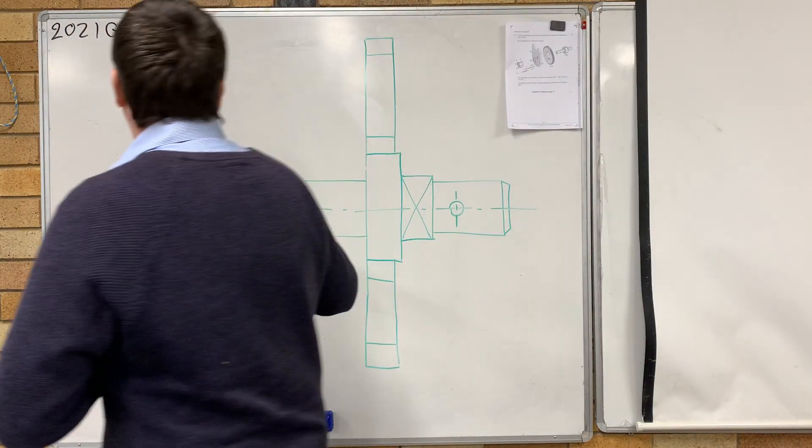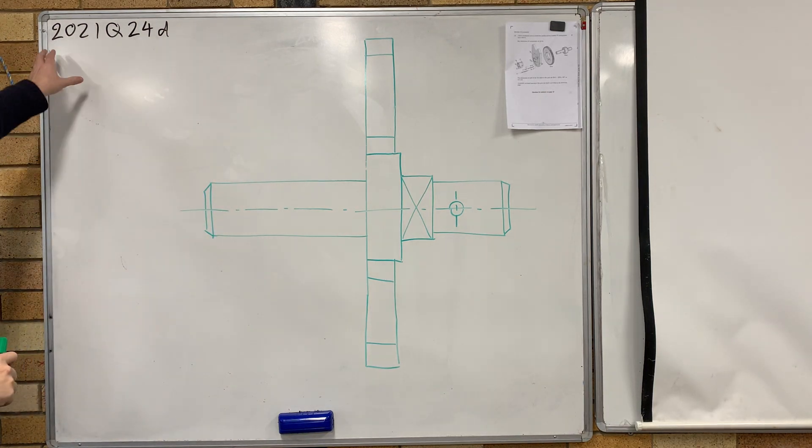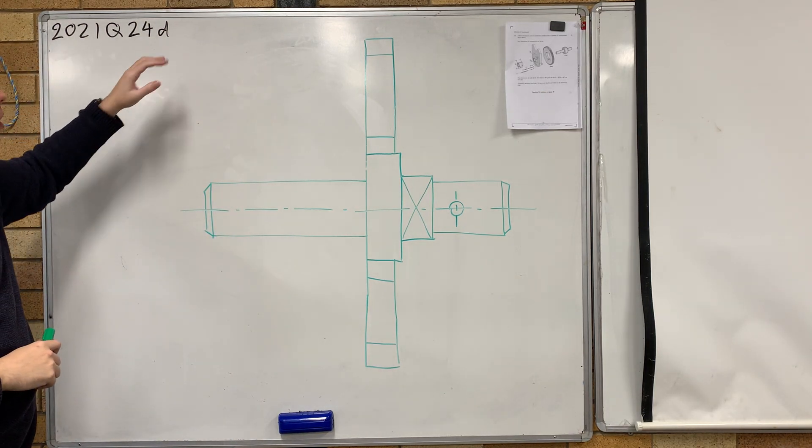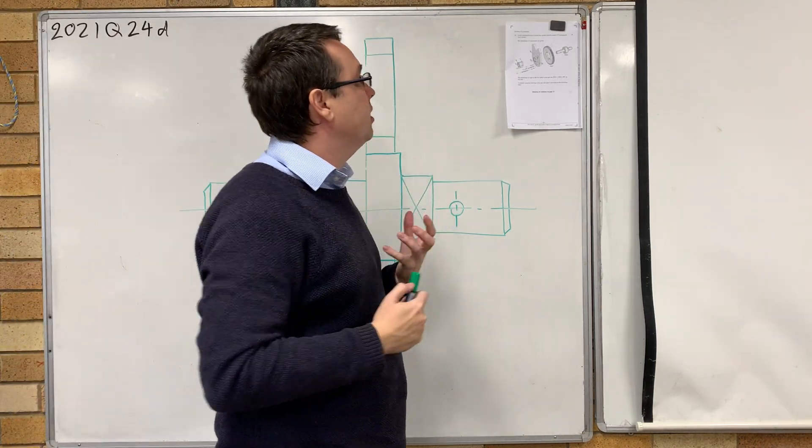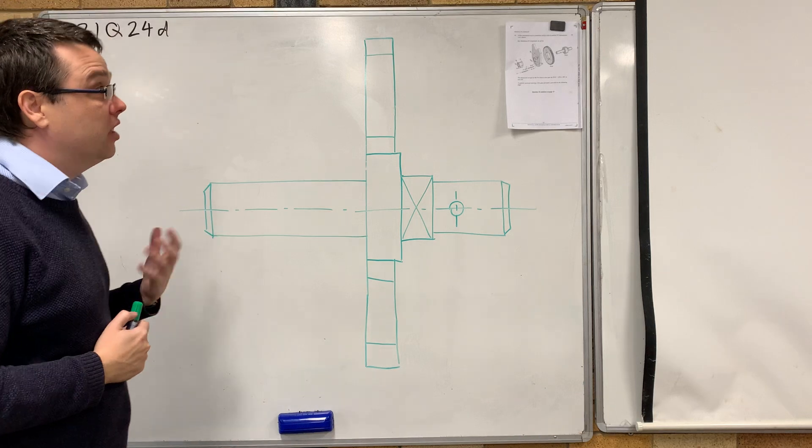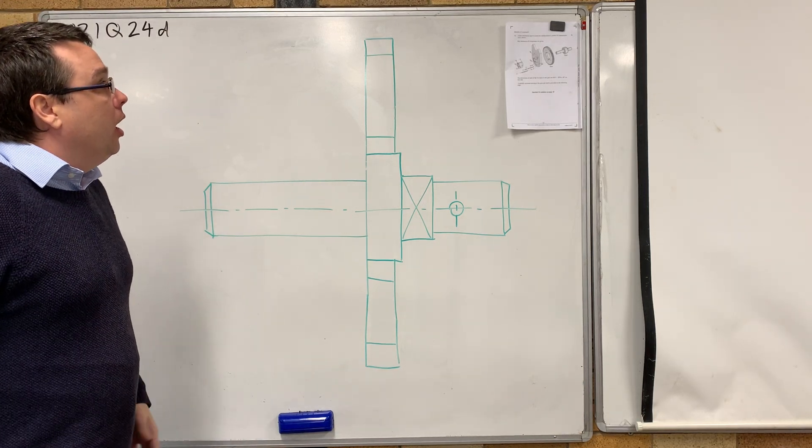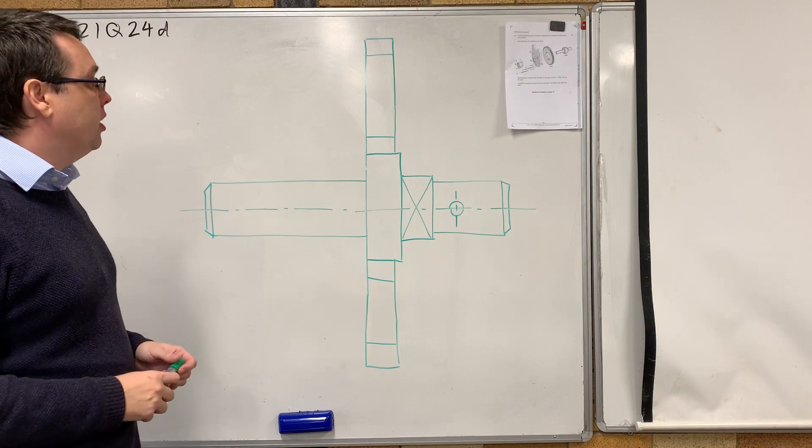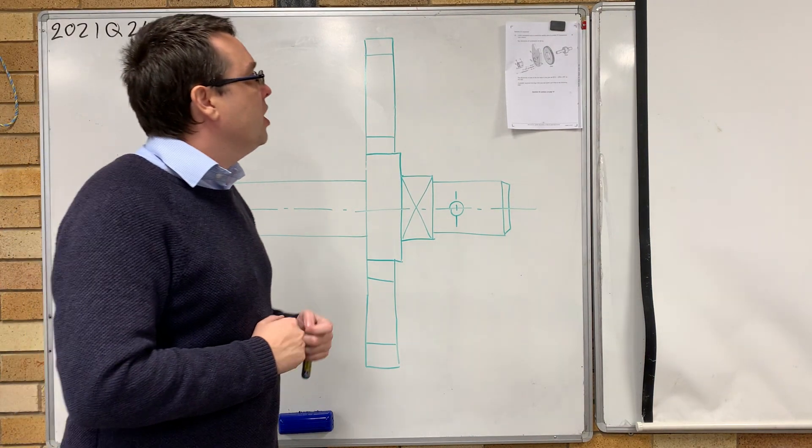In this video, I'm going to be drawing the solution to question 2021 HSC paper, question 24D. There's a lot to go on here. This is a six mark question, and the year before I had a large question as well. So I've had students comment that they thought this was a fairly complicated question, so let's break it down.